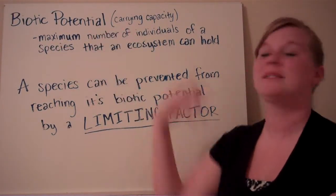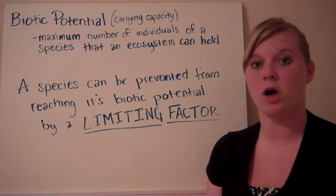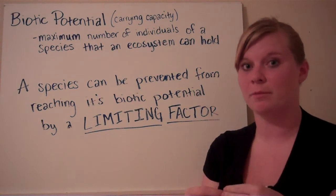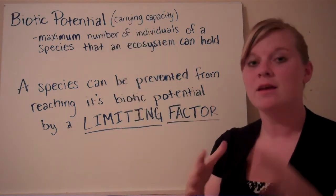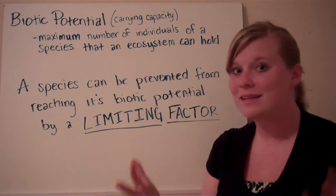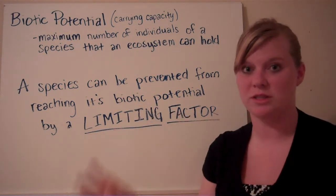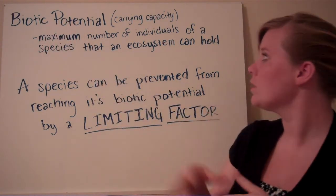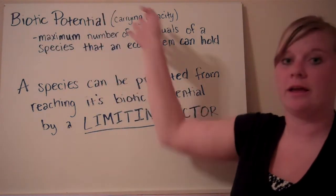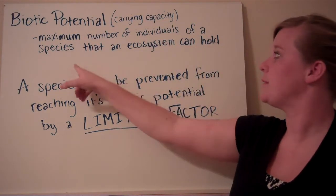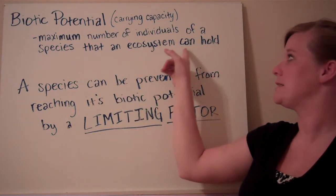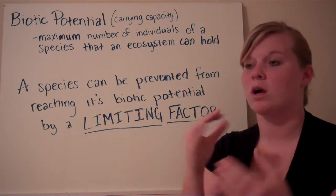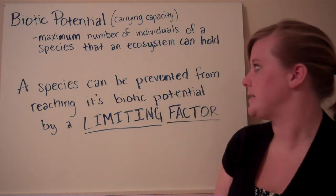We're talking about the biotic potential of a species, also known as its carrying capacity. Typically when looking at graphs or specific numbers, you'll hear it referred to as carrying capacity, while biotic potential is used for more qualitative data. Biotic potential or carrying capacity is the maximum number of individuals of a species that an ecosystem can hold — meaning one specific ecosystem has the resources to support that many animals of that species.